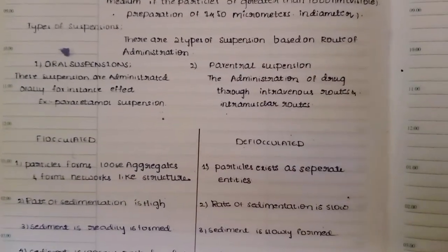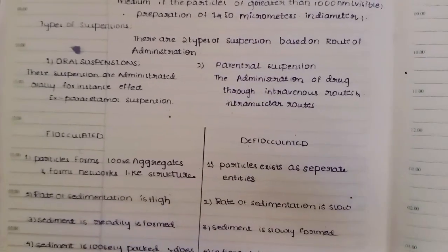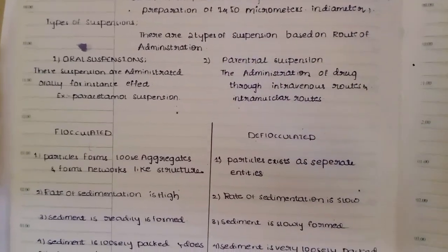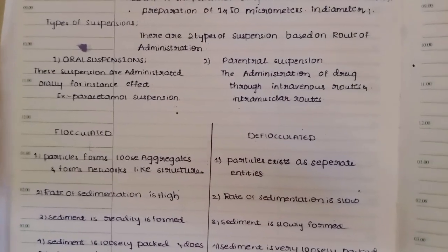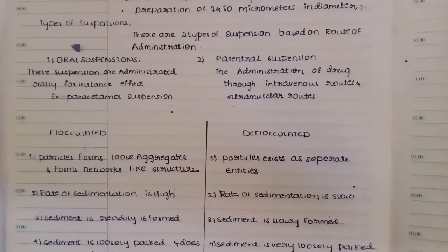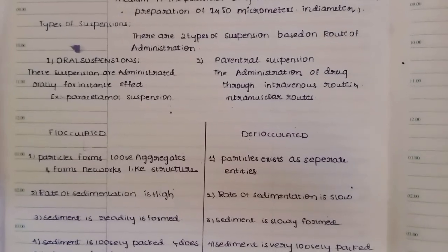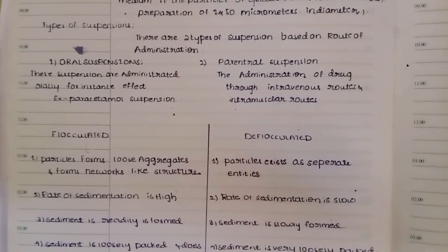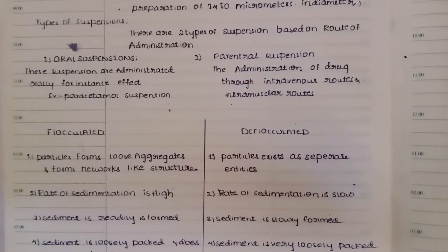Suspensions are of two types based on route of administration — our suspension is nothing but a medicament. One is oral suspension and the other is parenteral suspension. Oral is through the buccal cavity. These suspensions are administered orally for instant effect. For example, paracetamol suspension is an example of oral suspension.